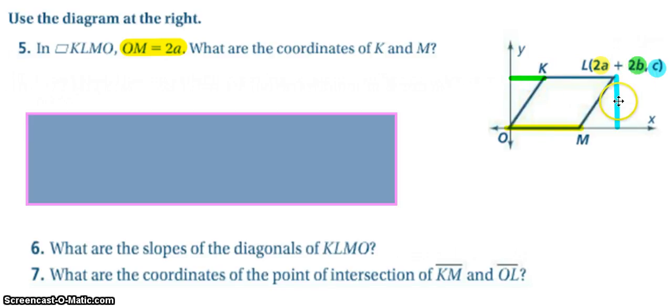Similarly, I know that it has a vertical distance off the x-axis of C, so that K I know has a y value of C as well. So we get a K point of 2B comma C and M value of 2A zero.